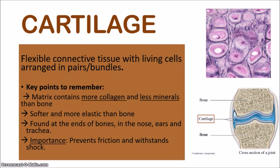Cartilage is a more flexible connective tissue with living cells arranged in pairs and bundles. You can see some similarities and differences right away. Cartilage, just like bone, is made up of living cells, but the arrangement is a little different. Key points to remember: the living cells secrete a matrix which contains more collagen and less minerals than bone — the same calcium and phosphorus — but always remember that cartilage has more collagen and less minerals than bone. This makes the cartilage tissue softer and more elastic than bone.